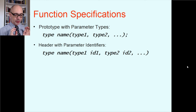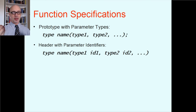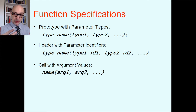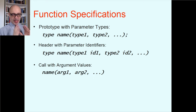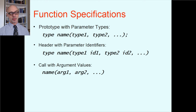When actually defining the function — implementing it — you have a header similar to the prototype, but here you need identifiers for the parameter variables. You see the same return type, the same function name, and parentheses with both the type and an actual name for each parameter. When you call it, you don't need to indicate the return type — just name the function and pass in the numbers or variables, and the program jumps into the function.